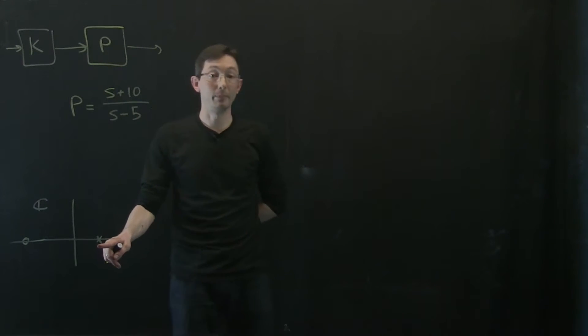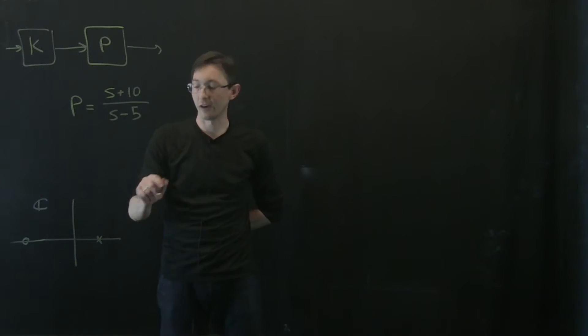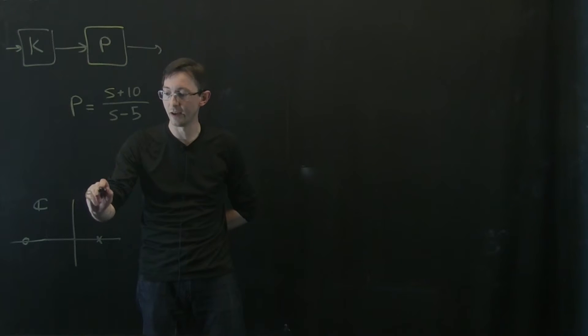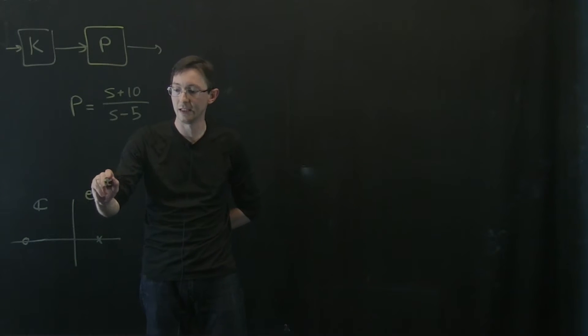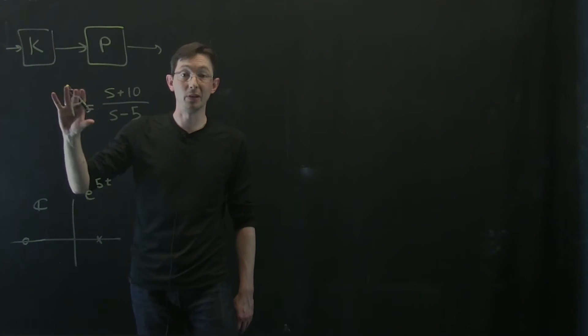We know that a pole in the right half plane is unstable because this one over S minus 5 corresponds to something in the time domain that looks like e to the plus 5T, which blows up exponentially in time. So this is an unstable plant.